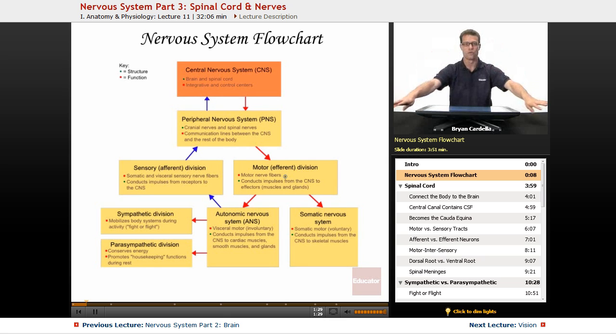Efferent is going down, going out. And another way you can remember it is that the end goal of an efferent signal is the effector, which starts with the same beginning there. Whatever is being effected, a muscle, a gland, an organ by that motor signal.